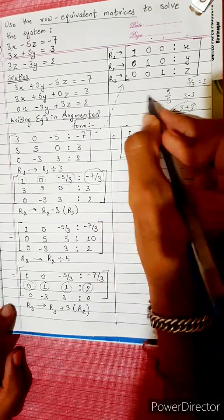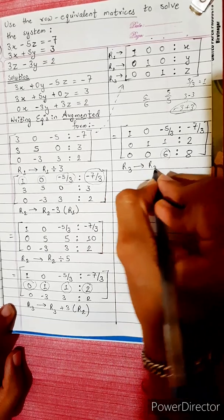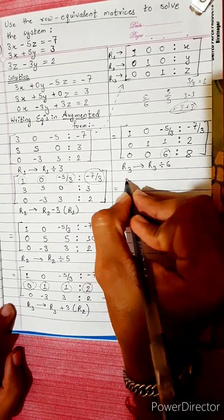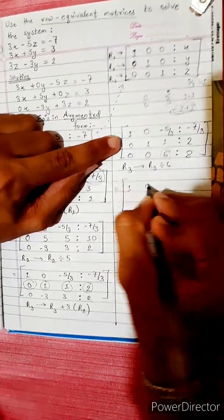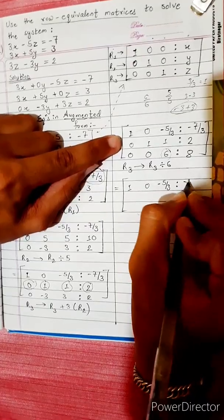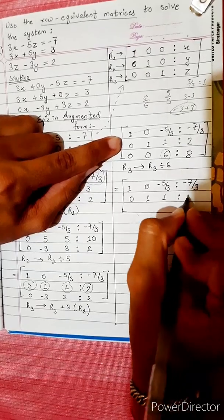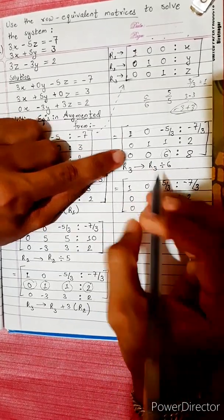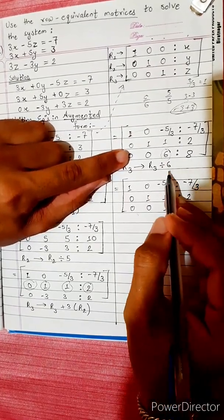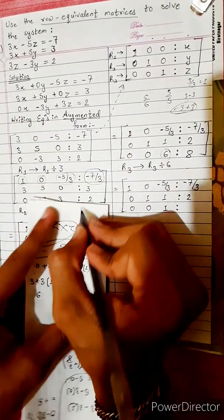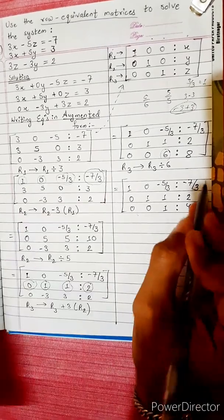Now R3 changes into R3 divided by 6. The matrix is R1: [1, 0, -5/3 | -7/3], R2: [0, 1, 1 | 2]. For R3: 0/6 = 0, 0/6 = 0, 6/6 = 1, and 8/6 = 4/3. So the new R3 becomes [0, 0, 1 | 4/3].